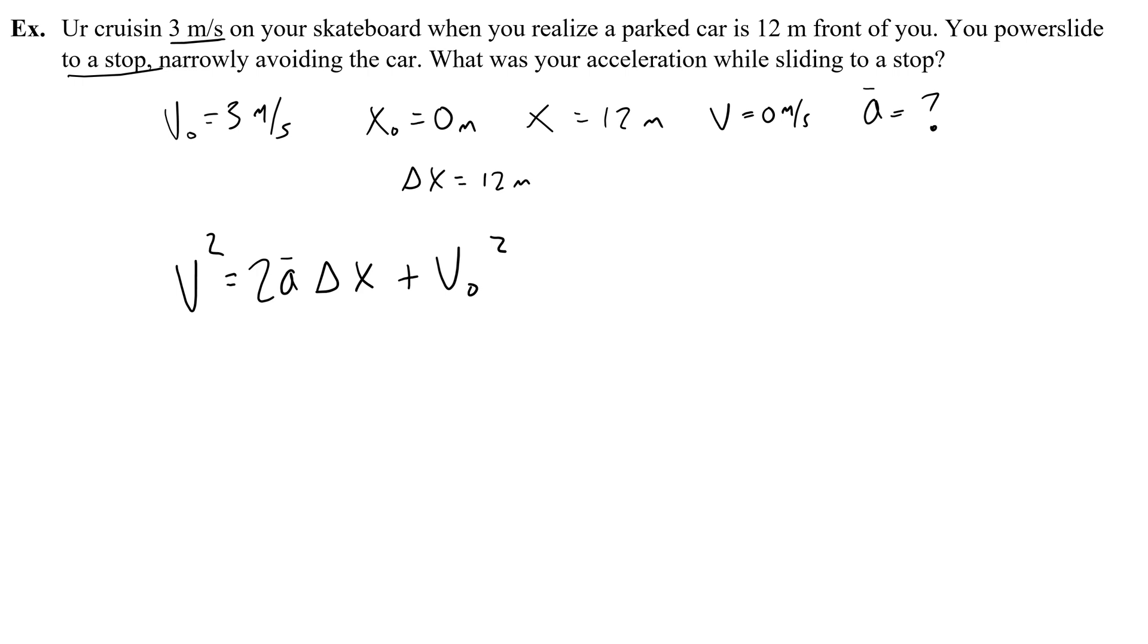So now, let's solve. The final velocity is 0. That means this goes away. And since there's nothing on the left, I'm just going to write a 0. Now, I need to get a by itself. So to get the acceleration by itself, I would subtract v naught squared from both sides. And then I see I need to get rid of the 2 and the delta x. So I would divide by 2 and delta x. So now I have the acceleration is negative v naught squared over 2 delta x.